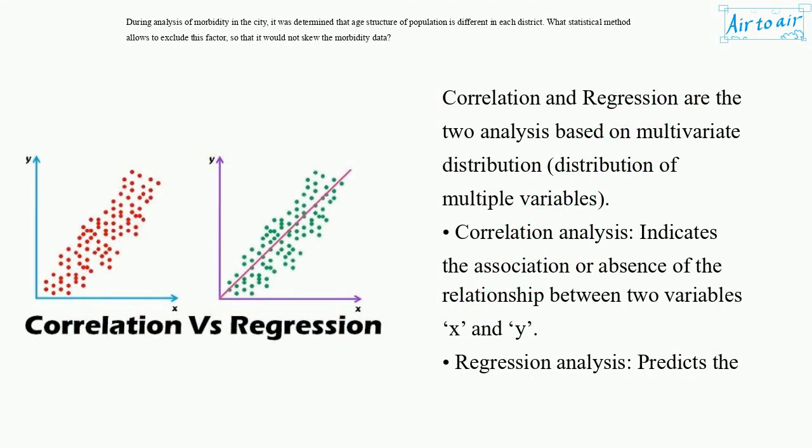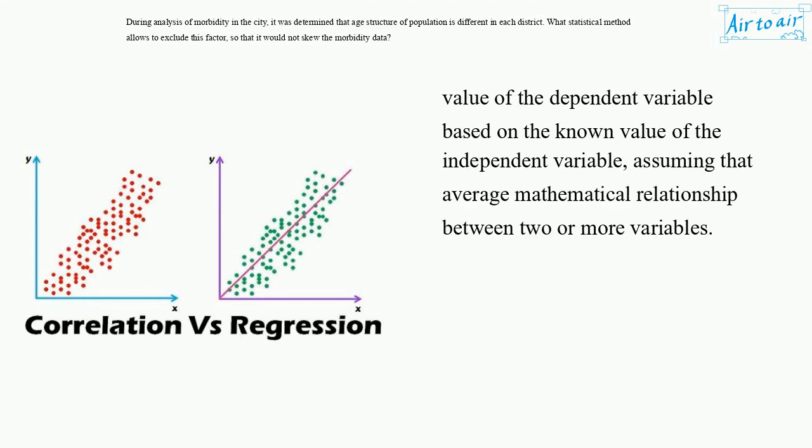Correlation and regression are two analyses based on multivariate distribution. Correlation analysis indicates the association or absence of the relationship between two variables, x and y. Regression analysis predicts the value of the dependent variable based on the known value of the independent variable, assuming that average mathematical relationship between two or more variables.